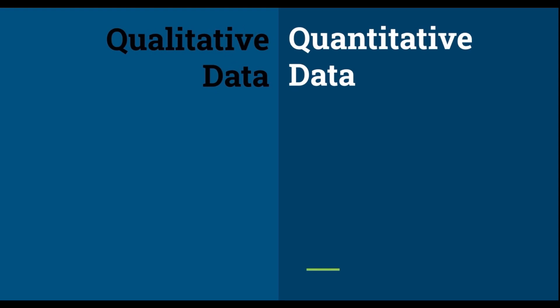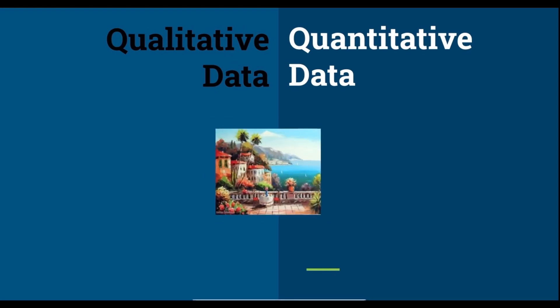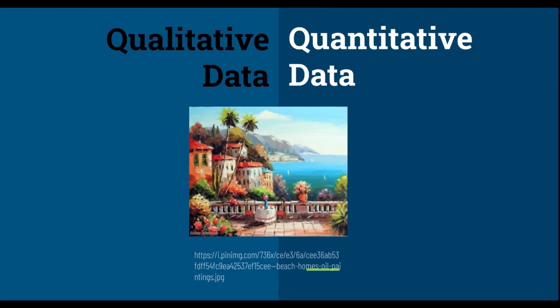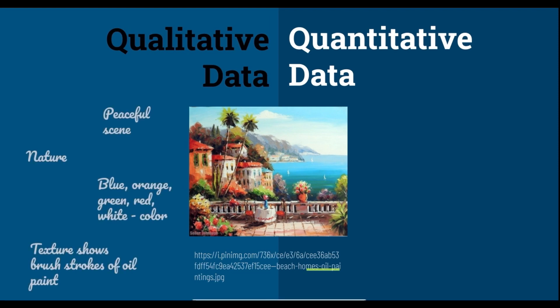Let's say a researcher wants to know something about an oil painting canvas. What data can we collect from this oil painting canvas? Let us describe this painting. If we are talking about a peaceful nature scene, and you describe the oil painting using its colors — the blue, orange, green, red, and white — and the texture shows brush strokes of oil paint, those belong to qualitative data.